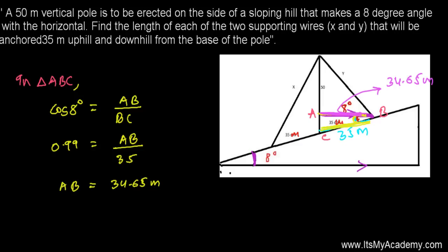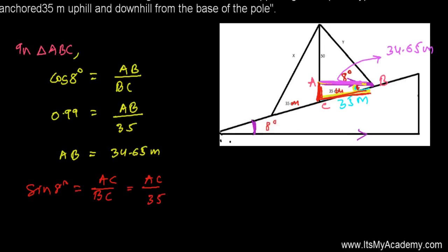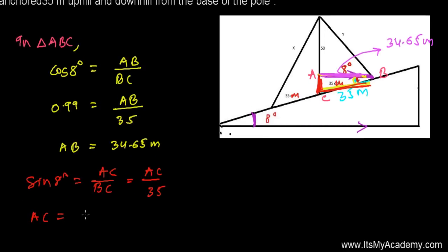Now using the sine formula in the same figure: sine of 8 degrees equals perpendicular over hypotenuse, so sine(8°) = AC/BC. AC = sin(8°) × 35 = 4.87 meters. You can use your calculator to verify. So we have AC = 4.87 meters.